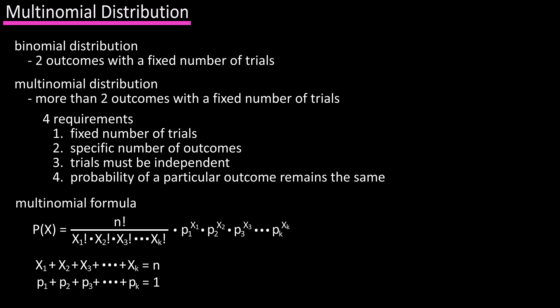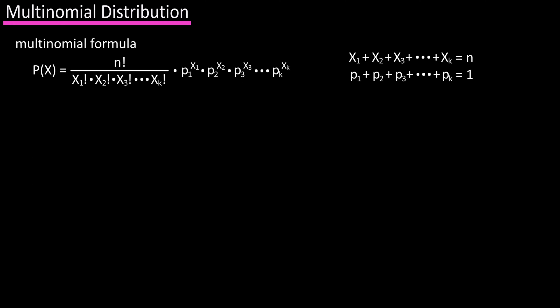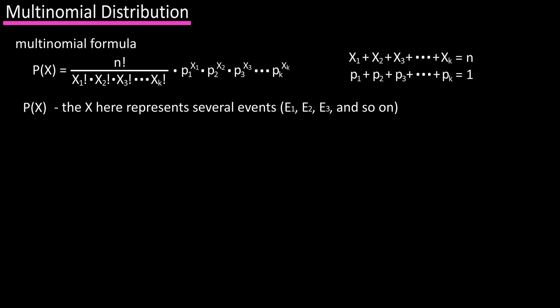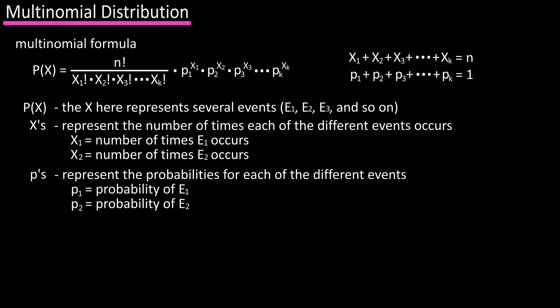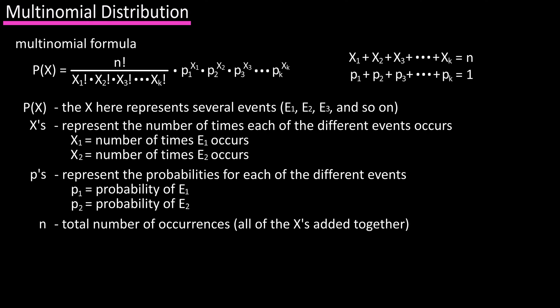So, a lot to unpack here, but it's actually easier than you may think. In this formula, P(x) consists of several events — e1, e2, e3, and so on — and the x's represent the number of times each of the different events occur. So x1 represents the number of times event one (e1) will occur, and the p's represent the probabilities of each of those events, and n is equal to the total number of occurrences of those events.